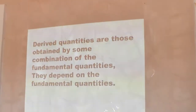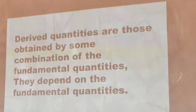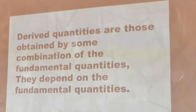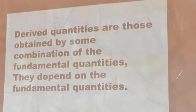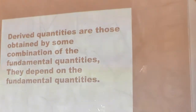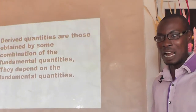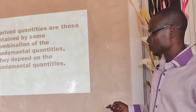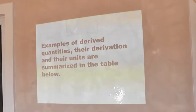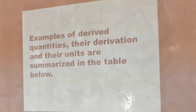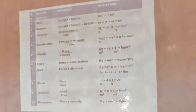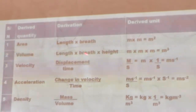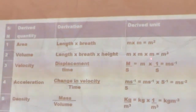After fundamental quantity, we will take a look at derived quantity. Derived quantities are those obtained by some combination of the fundamental quantities. When two or more fundamental quantities are combined, we don't call it fundamental anymore — we call it a derived quantity, because they have been derived from fundamental quantities. The examples of derived quantities, their derivation, and their units are summarized in the table below.